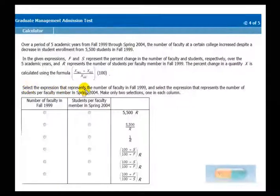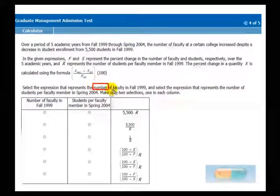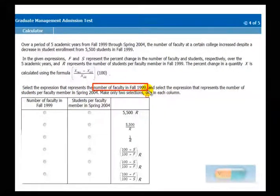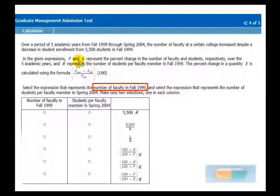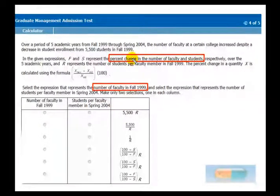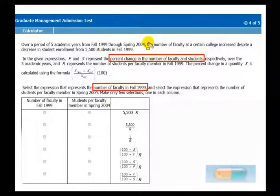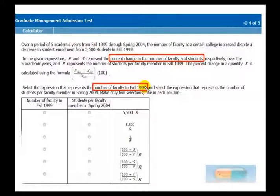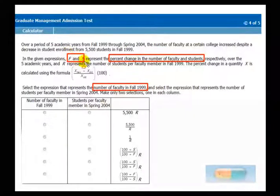So this question, select the expression that represents the number of faculty in 1999. Now think about that. The number of faculty. What information do we have? We have the percent change of faculties and students. Remember this percent change is between the two years. This question is asking you what is the actual number in one particular year. So we already know that whatever the answer is it has nothing to do with F and S.